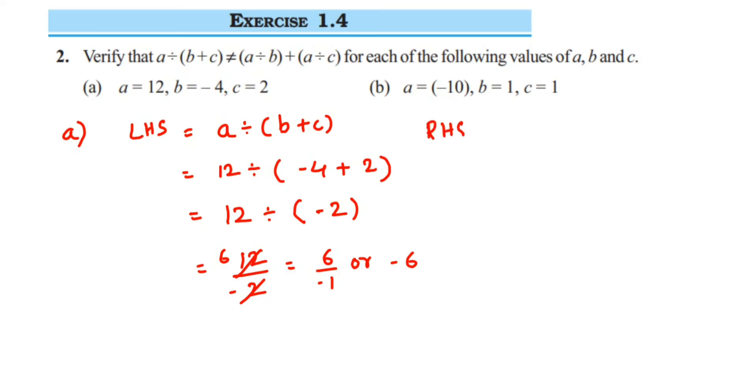In the RHS part we have (a÷b) + (a÷c). Substitute the values. a value is 12, so 12 divided by b value is -4, plus 12 divided by c value is 2.